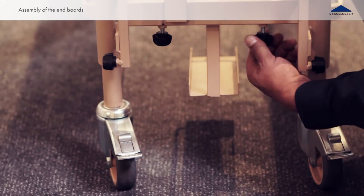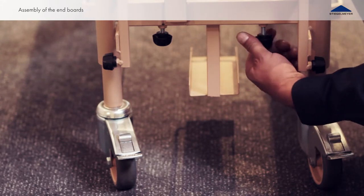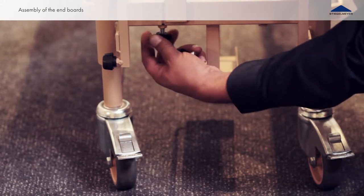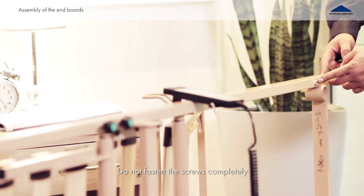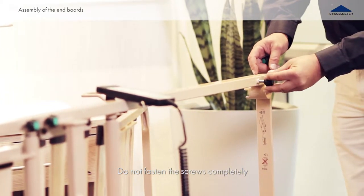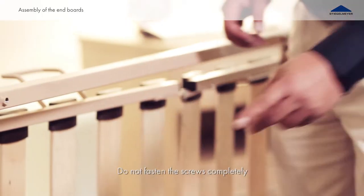First loosen the two knurled screws on the transport aid by the headboard, then the two knurled screws by the footboard. Use these screws to affix two at the head side on the reclining surface, and then move to the foot side to affix the other two knurled screws.